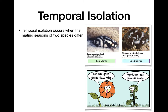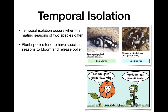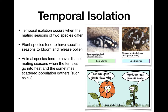The next type is temporal isolation — 'temporal' meaning time. This is about when two species' mating seasons are different enough that they can't mate at the same time. In plant species this is usually about pollen: flowers release pollen either into the wind or via a pollinator, and that pollen needs to land on another flower. If one flower is still closed while another is open, they won't cross-pollinate because they have different bloom seasons.